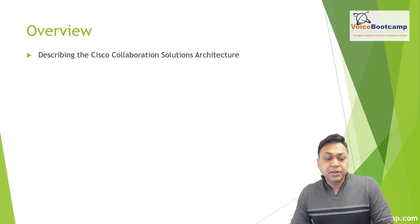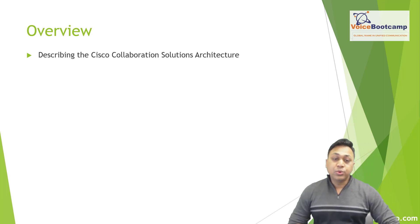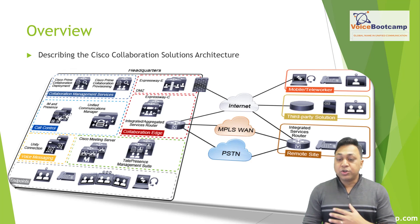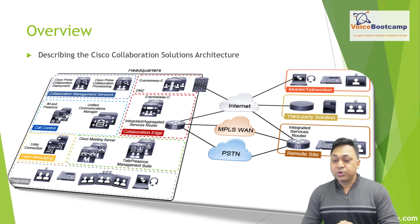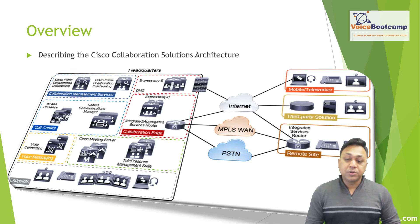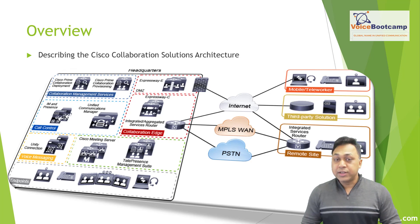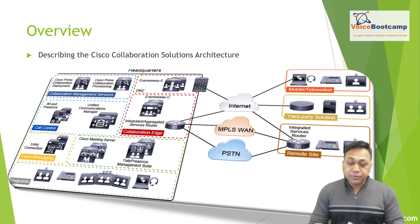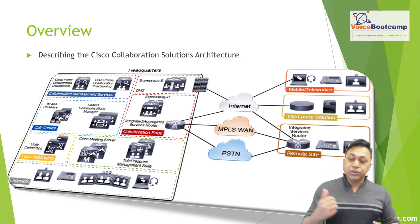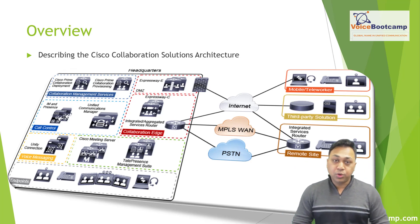The first thing you need to understand about Cisco collaboration is architecture, which is the biggest aspect of your design and implementation. We're going to describe the Cisco collaboration architecture, exploring the various aspects of collaboration and elements necessary to understand, deploy, and manage today's collaboration networks. This architecture lays down the foundation upon which all components of unified communication are deployed.